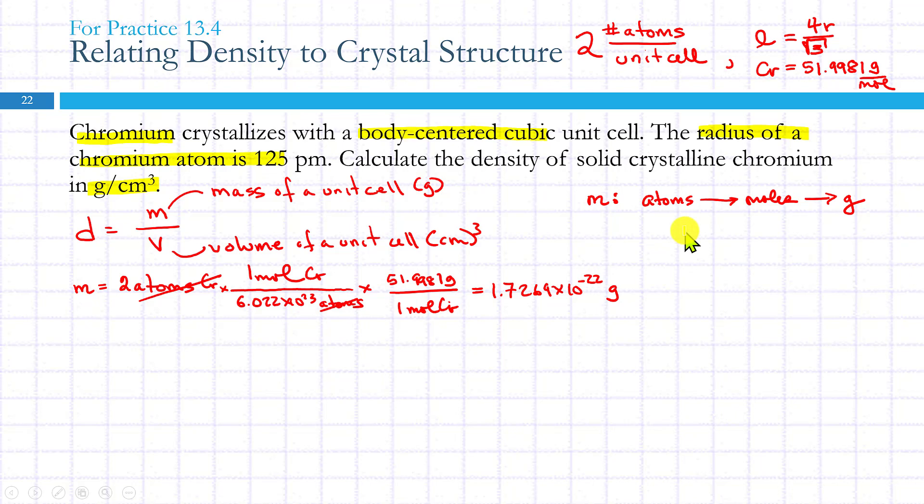We also know that we can calculate the edge length. Now we've already finished the top half of the calculation—we just need to finish calculating the volume of the unit cell. I know that L is equal to 4 over the square root of 3 times r.